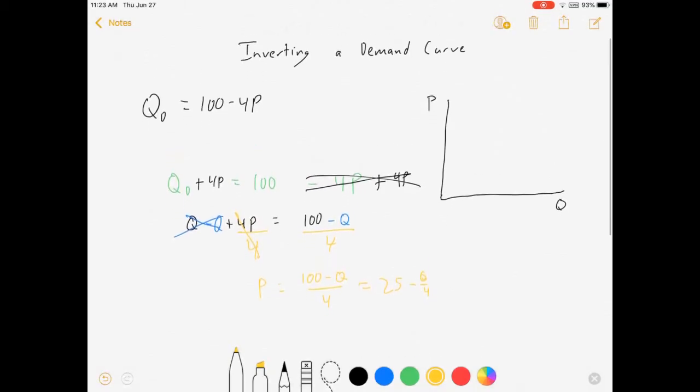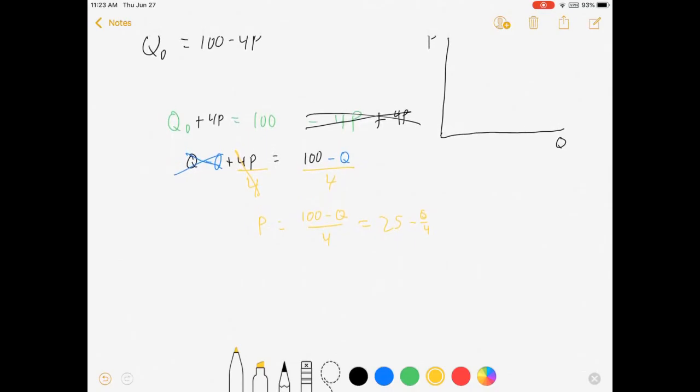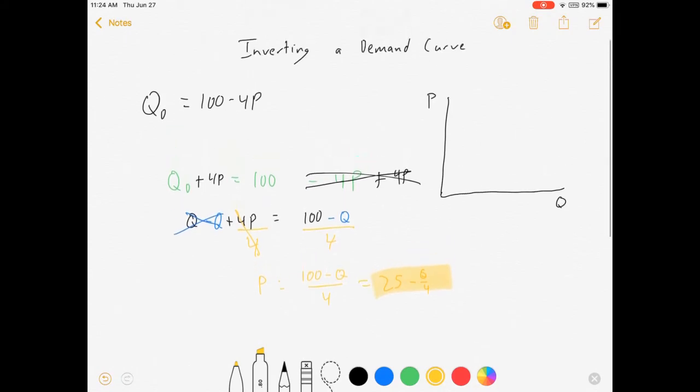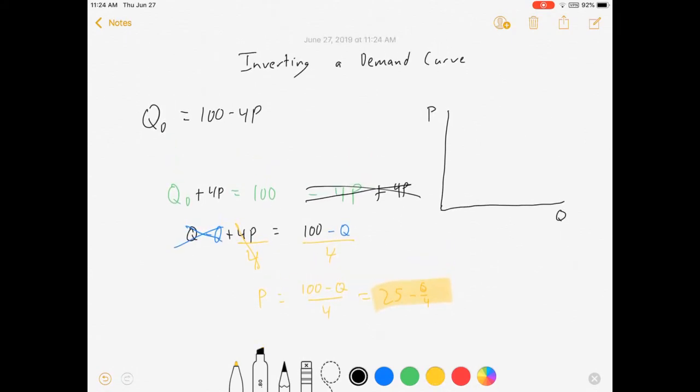And that's how you invert a demand curve. This equation here gives me the exact same information as this equation here, but the demand curve is Q as a function of P. The inverse demand curve is price as a function of Q.